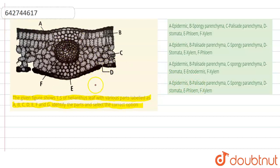We could see that this is the TS section, that means the transverse section of the Helianthus leaf. After viewing it under the microscope, it looked somewhat like this. Now this is the outermost layer, so the outermost covering is known as the epidermis of the leaf. So A here represents the epidermis.